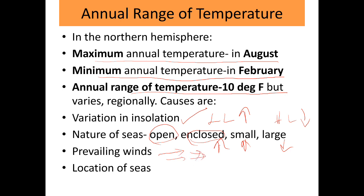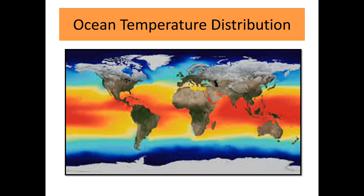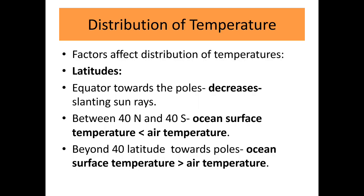Prevailing winds blowing in a particular direction cause a lot of energy to be lost from the surface of ocean water. The location of seas also matters — depending on latitude variation, in low latitudes the temperature will be high and in higher latitudes it will be less. In low latitudes the sun delivers a lot of energy because temperature is high, whereas in the polar region the temperature is very low.